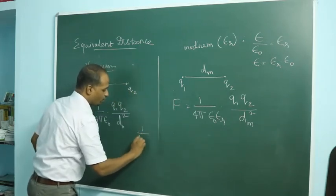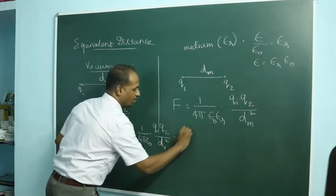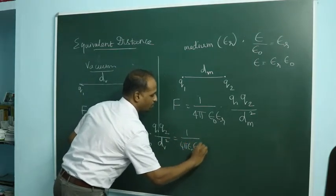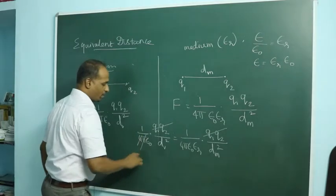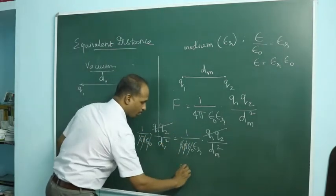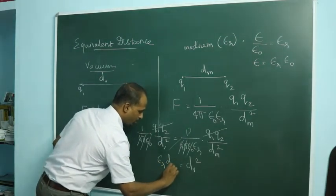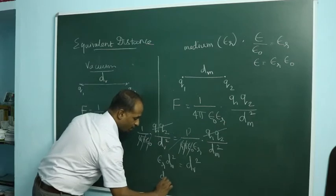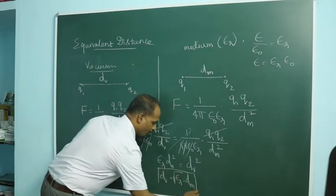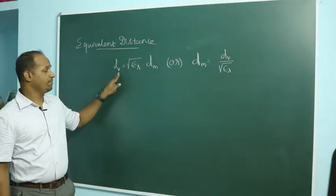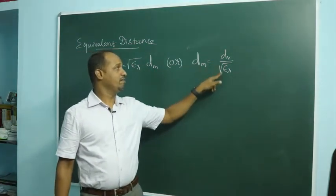Setting the two expressions equal: 1 over 4 pi epsilon_naught times q1 q2 over D_vacuum squared equals 1 over 4 pi epsilon_naught epsilon_r times q1 q2 over D_medium squared. Solving this gives D_vacuum equals root(epsilon_r) times D_medium, or equivalently, D_medium equals D_vacuum divided by root(epsilon_r).